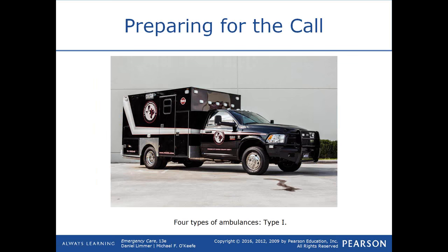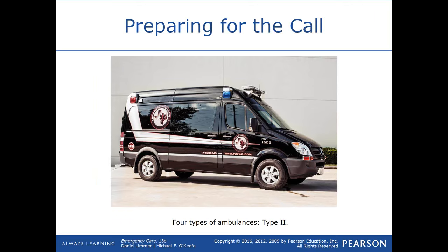Preparing for the call certainly includes the type of ambulance you have. There are essentially four types. A Type 1 is a modular body mounted on a truck frame with no communication between the truck and the box. A Type 2 is a van that comes in a variety of sizes — it may be extended in length, extended in height, or a mini transport van.